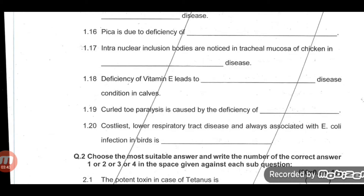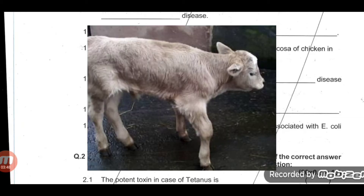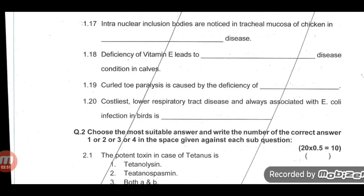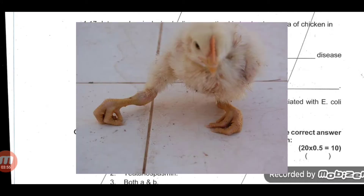Question 16: Deficiency of vitamin E leads to white muscle disease in calves. Question 18: Curled toe paralysis is caused by the deficiency of riboflavin, also known as vitamin B2.